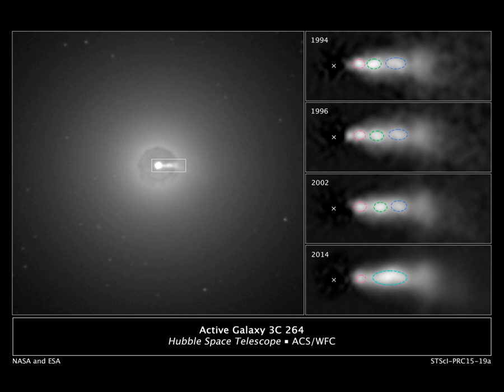Other astronomical objects that contain jets include cataclysmic variable stars, X-ray binaries, and gamma-ray bursts. Others are associated with star-forming regions including T-Tauri stars and Herbig-Haro objects, which are caused by the interaction of jets with the interstellar medium. Bipolar outflows or jets may also be associated with protostars, evolved post-AGB stars, planetary nebulae, and bipolar nebulae.